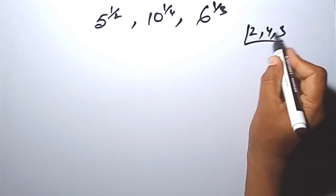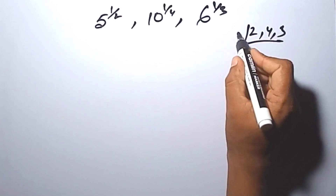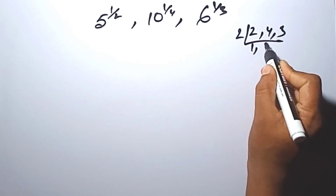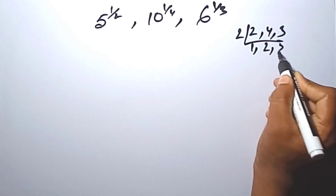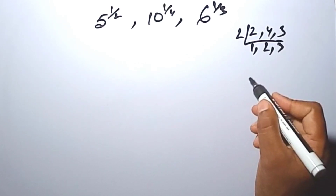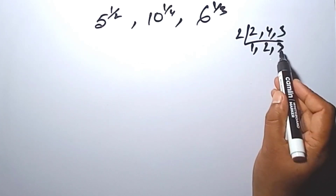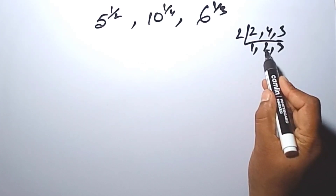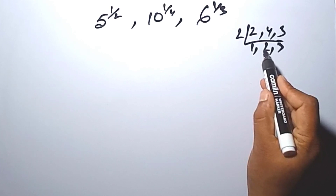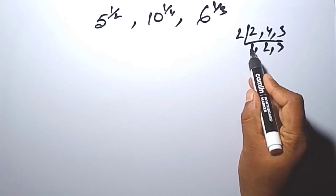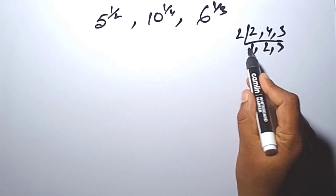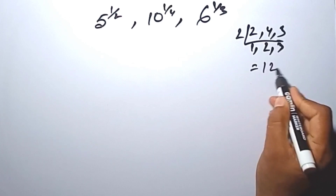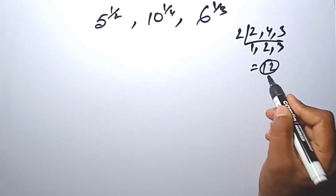Find the LCM of between of this. So their LCM is 3 into 2 = 6, 6 into 1 = 6, 6 into 2 = 12. So the LCM is 12.